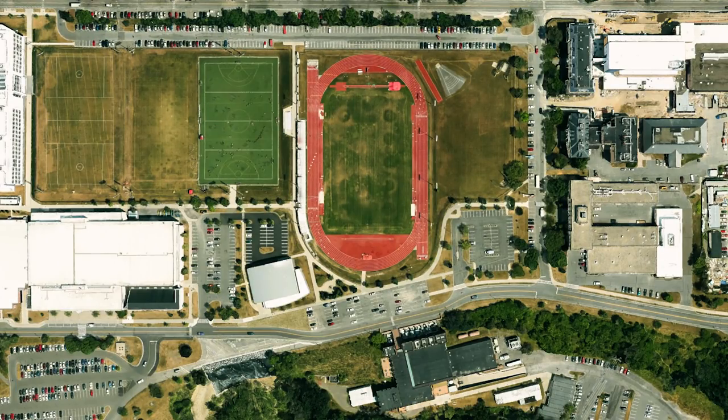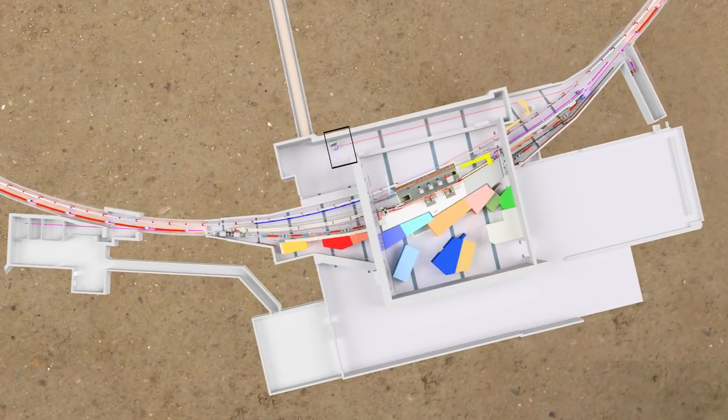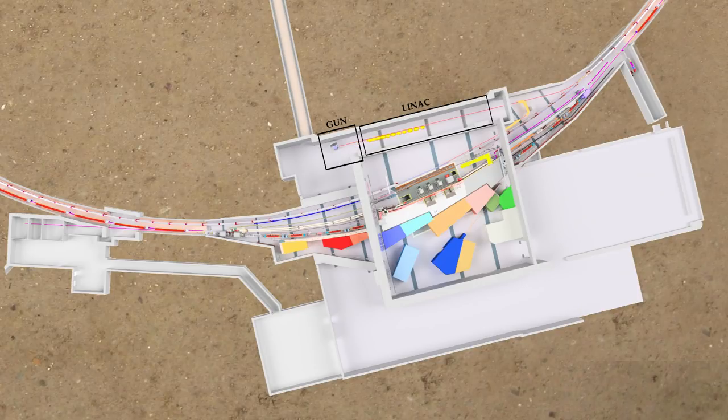Forty feet below the Cornell campus, positrons are created and pulled into a linear accelerator, or LINAC, where a driving radio frequency is timed to energize and accelerate the particles in a straight line.